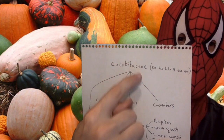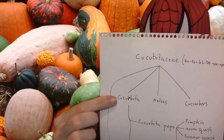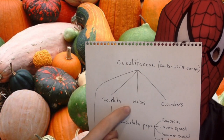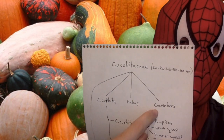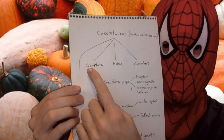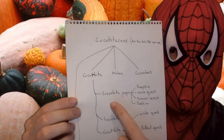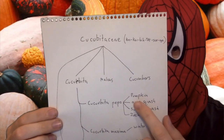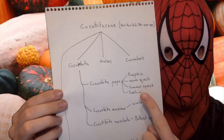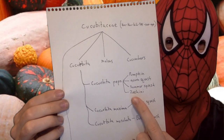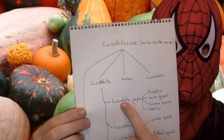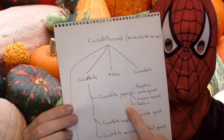Within this family we have the genus Cucurbita, and within the same family are the melons and the cucumbers. Within the genus Cucurbita, Cucurbita pepo includes all the pumpkins, all the acorn squashes, all the summer squashes, and yes, even zucchini. These are all cultivars of Cucurbita pepo.